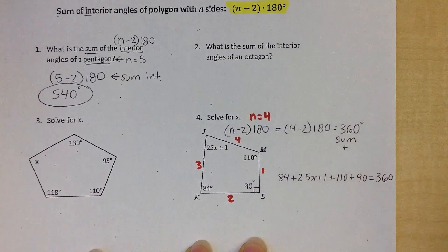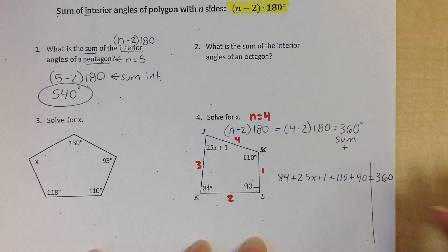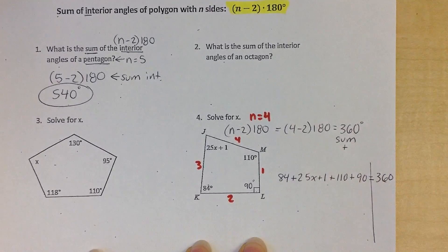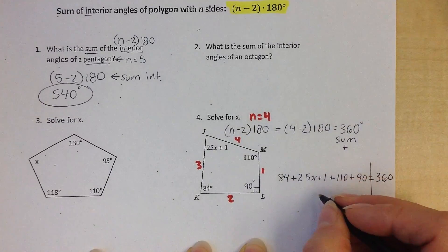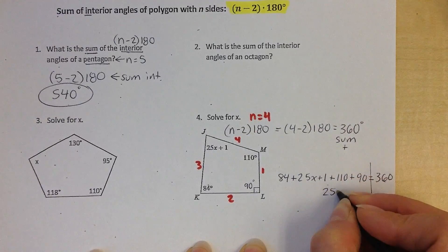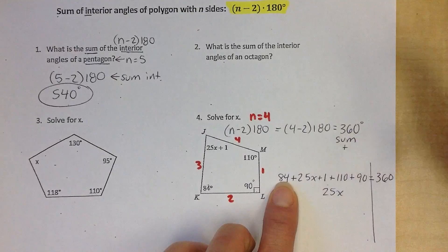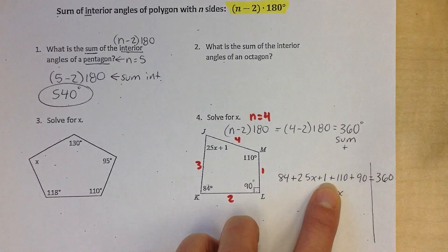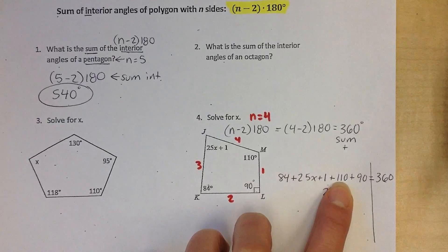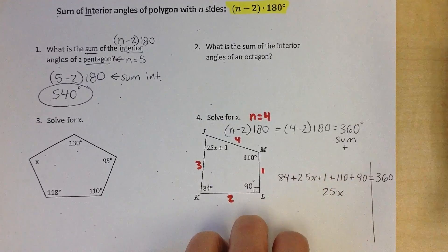Okay, so now I'm going to go and do my algebra. Everything here on the left, all my like terms can be put together. So I only have 25x, that's my only x term, and then I'm going to combine all my like terms here. 84, 1, 110, 90.